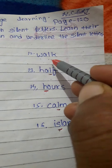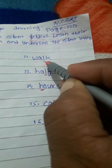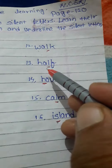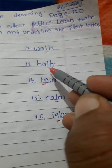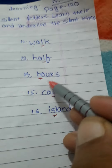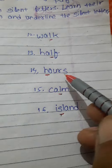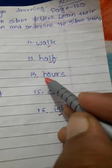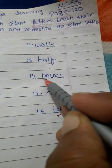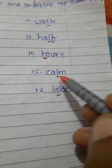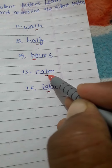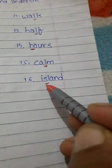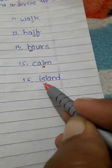Walk — here, L remains silent. Half — here, L remains silent. Hours — here, H remains silent. Come — here, L remains silent. Island — here, H remains silent.